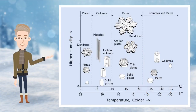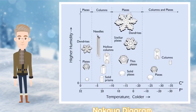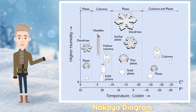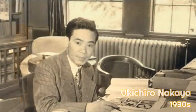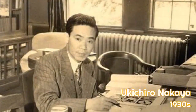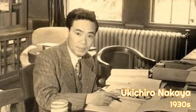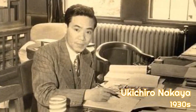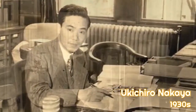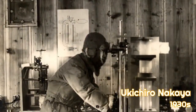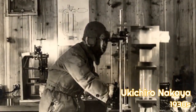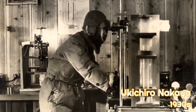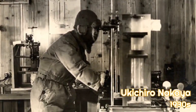The chart you see here is called the Nakaya diagram, after Japanese physicist Ukihiro Nakaya, who discovered this behavior by growing snow crystals in his lab in the 1930s.